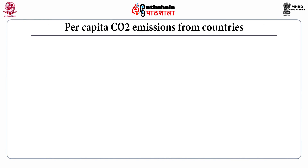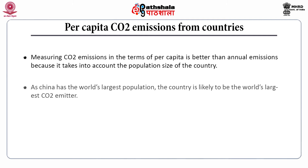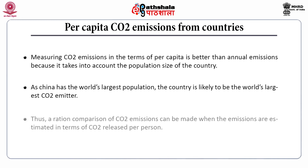Now we will see the per capita carbon dioxide emission from countries. Measuring carbon dioxide emission in terms of per capita is better than annual emission because it takes into account the population size of the country. As China has the world's largest population, it is likely to be the world's largest carbon dioxide emitter. A more rational comparison of carbon dioxide emission can be made when emissions are estimated in terms of carbon dioxide release per person.